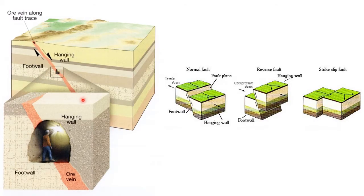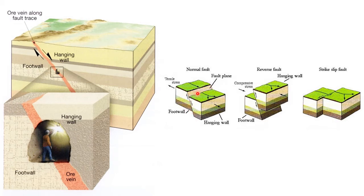The hanging wall and foot wall terms apply to non-vertical faults. In vertical cases, we cannot define which block is above or below. In the scenario where the hanging wall moves down — the fault scarp is the exposed region — this is a normal fault. The foot wall goes up relative to the hanging wall. Normal faults develop in a tensional or extensional regime where the maximum stress direction sigma-1 is vertical.